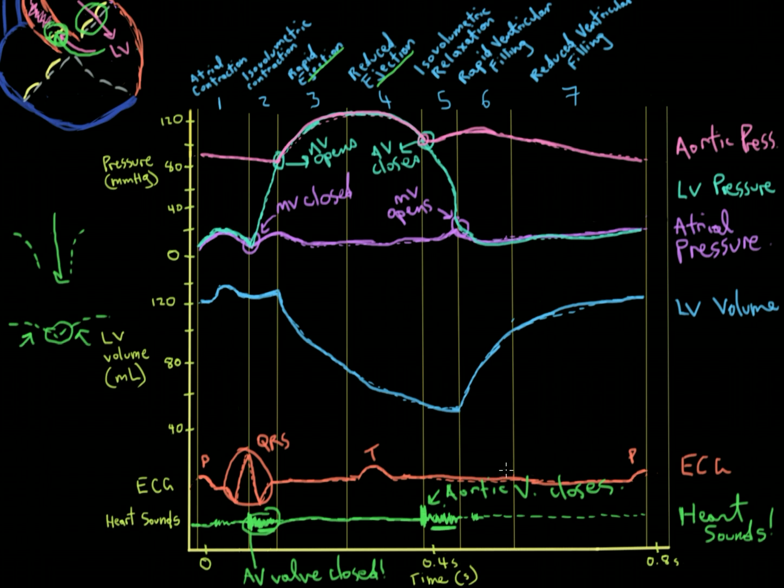You also get the pulmonary valve that closes at that time, just like how here you get both the left and right AV valves closing. We're just concerned with the left side of the heart here. To recap, the main two heart sounds that we need to be concerned with are the lub, the first heart sound that happens after atrial contraction, and that's the closing of the atrioventricular valves, both of them. Then the heart's pretty quiet, and then we get the second heart sound, and that's the closing of both the aortic and the pulmonary valves. There you have it.